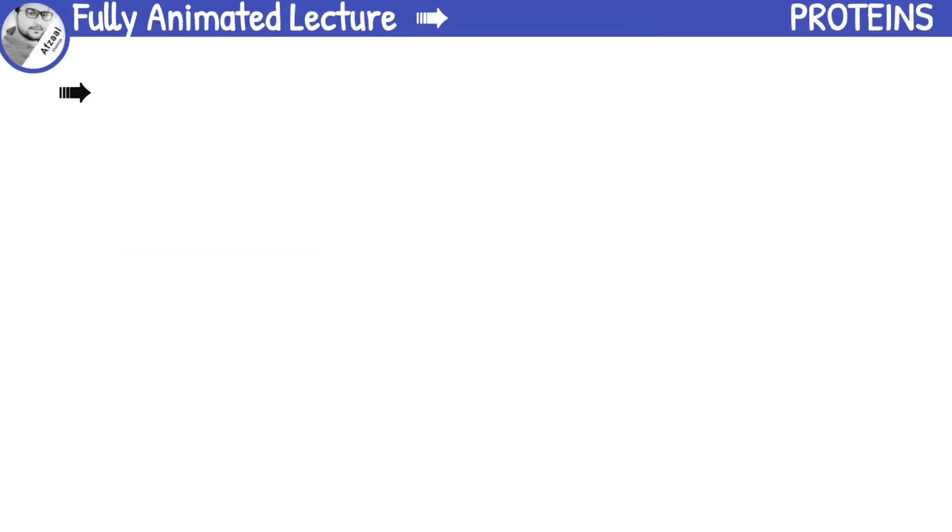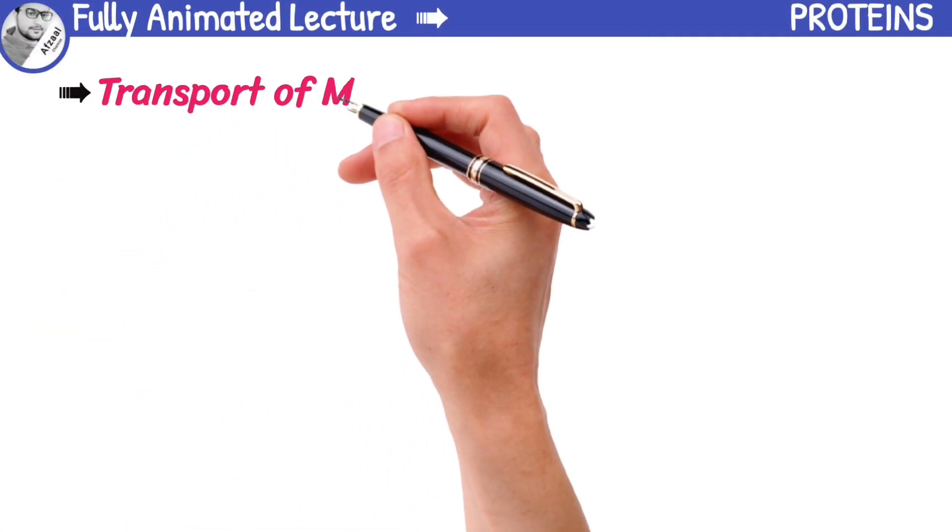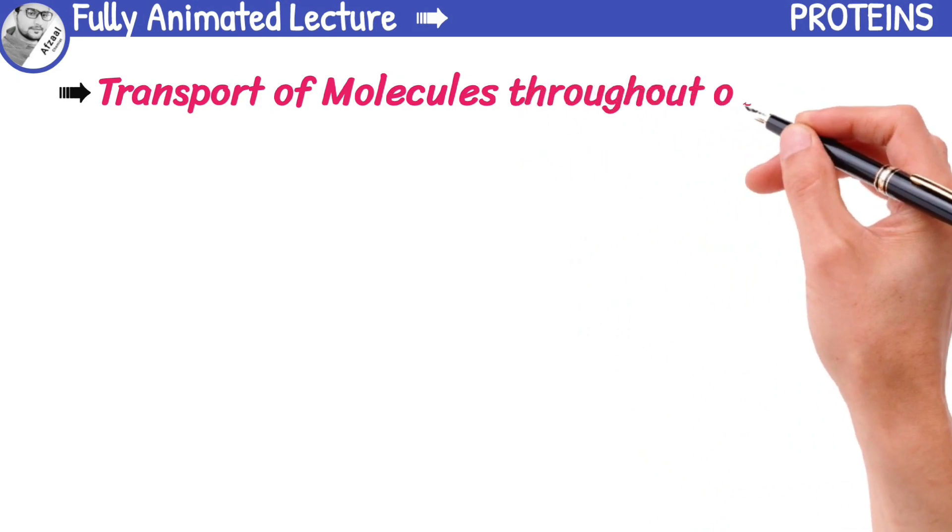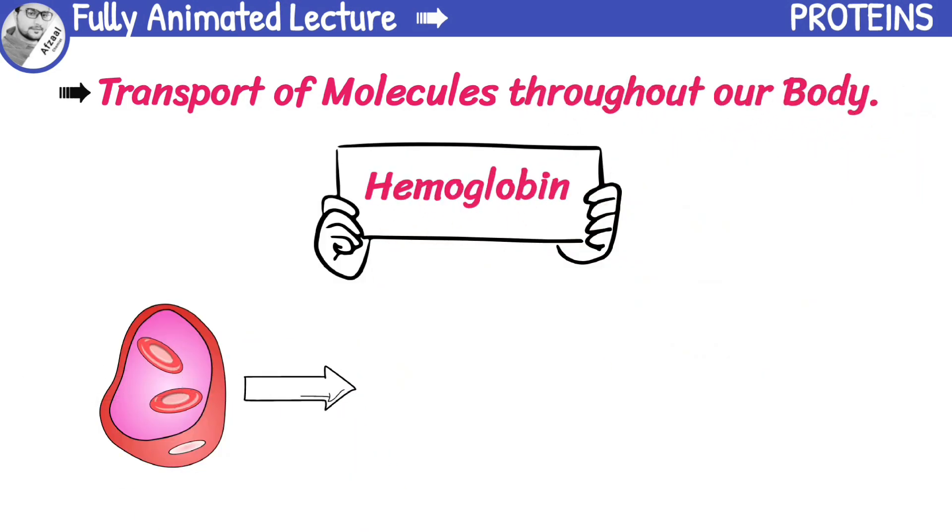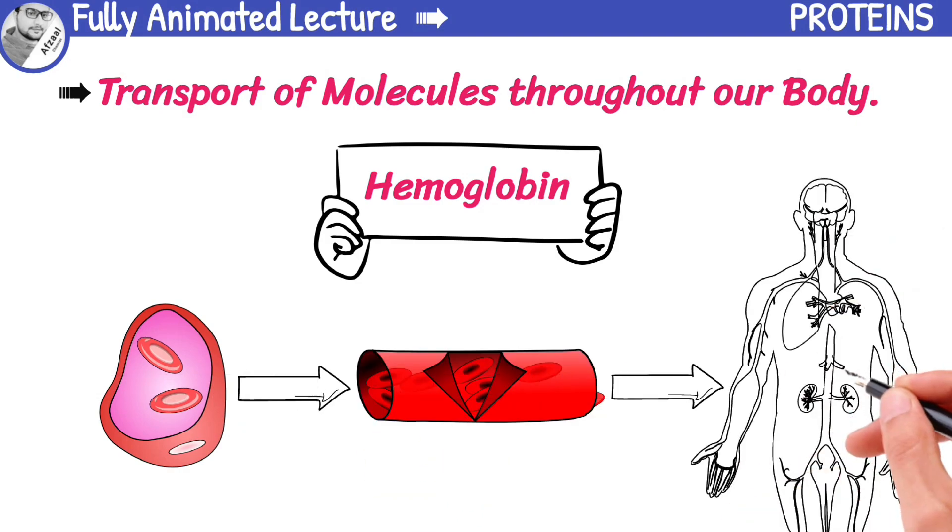Proteins are also responsible for the transport of molecules throughout our body. Hemoglobin is a type of protein found in red blood cells that are responsible for transporting oxygen from our lungs to the rest of our body.